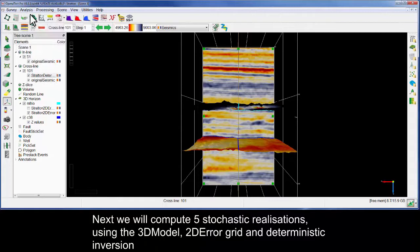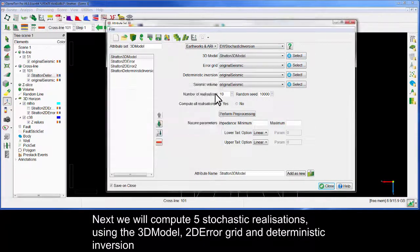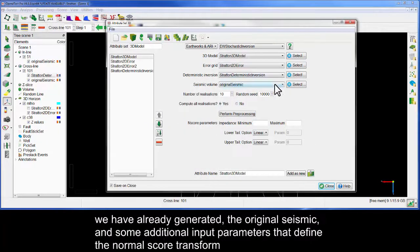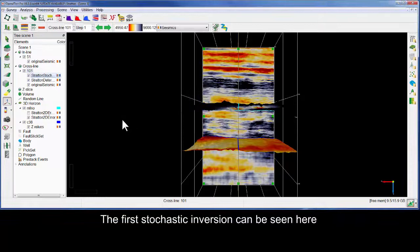Next, we will compute five stochastic realizations using the 3D model, 2D error grid and deterministic inversions we have already generated, the original seismic and some additional input parameters that define the normal score transform. The first stochastic inversion can be seen here.